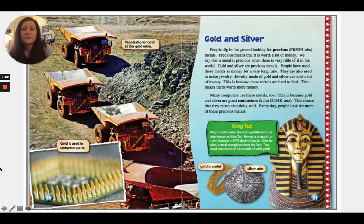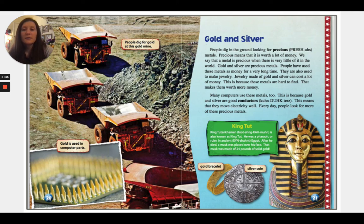People dig in the ground looking for precious metals. Precious means that something is worth a lot of money — we say a metal is precious when there is very little of it in the world. Gold and silver are precious metals. People have used these metals as money for a very long time, and they are also used to make jewelry, which can cost a lot of money because these metals are hard to find. Many computers use gold and silver too, because they are good conductors — this means they move electricity well.